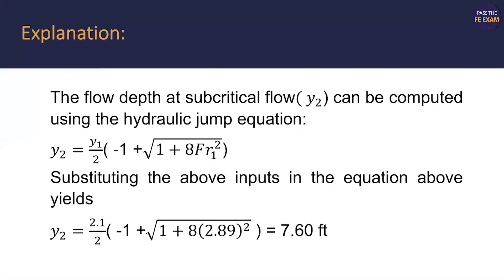Now, the flow depth at subcritical flow, which is what they're asking for, can be computed using the hydraulic jump equation. We did that last step because you need the Froude number for this equation here, and you can see the equation laid out for you. Now we have all this information. We have Y1 of 2.1 that was given to us in the statement, and we have the Froude number that we calculated of 2.89. By plugging all those in, you come up with your answer of 7.60 feet.